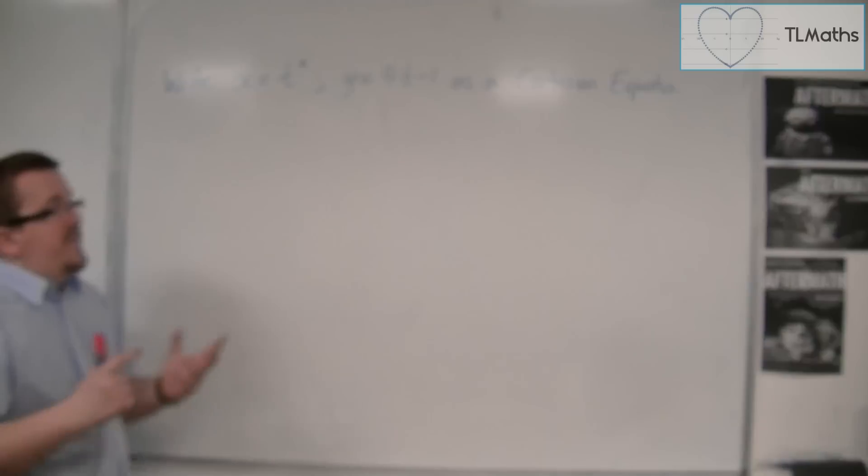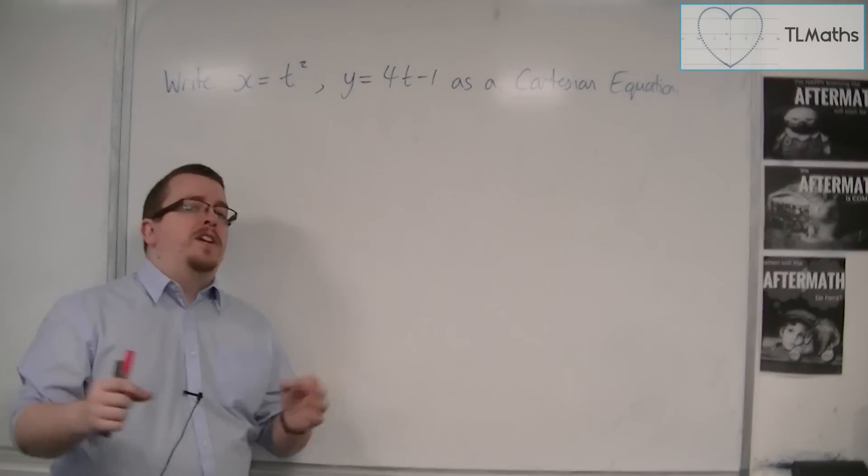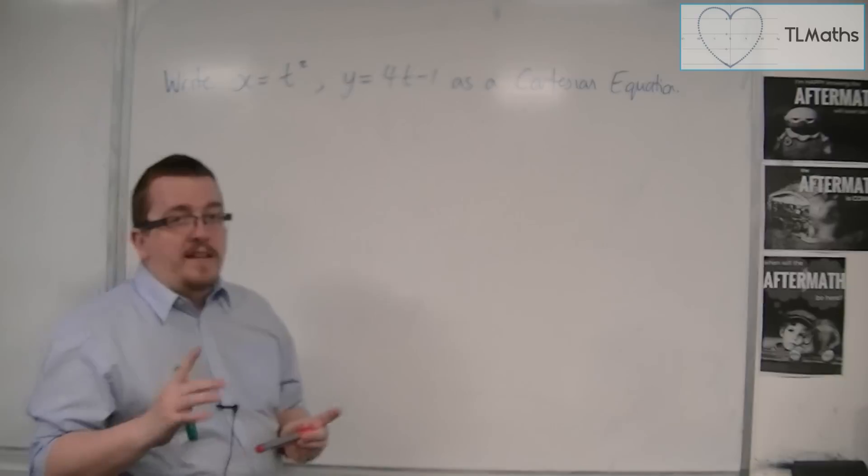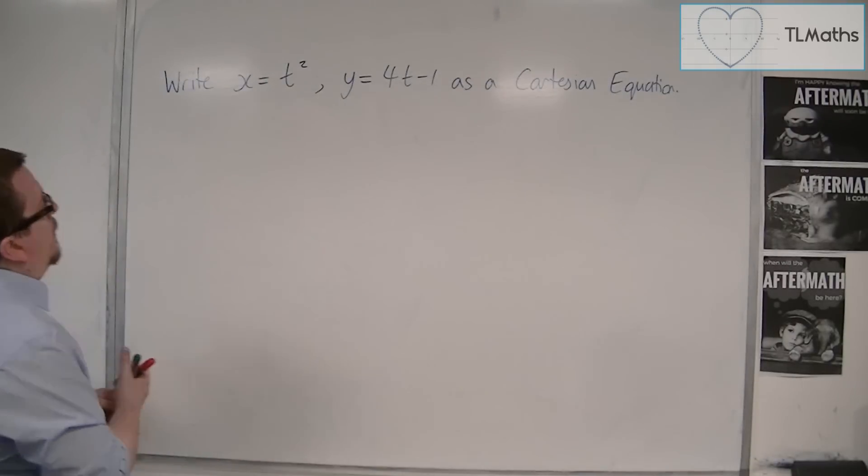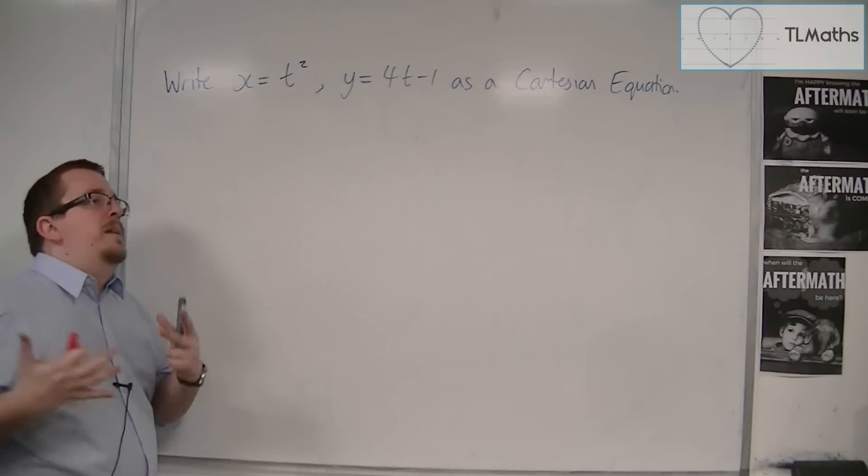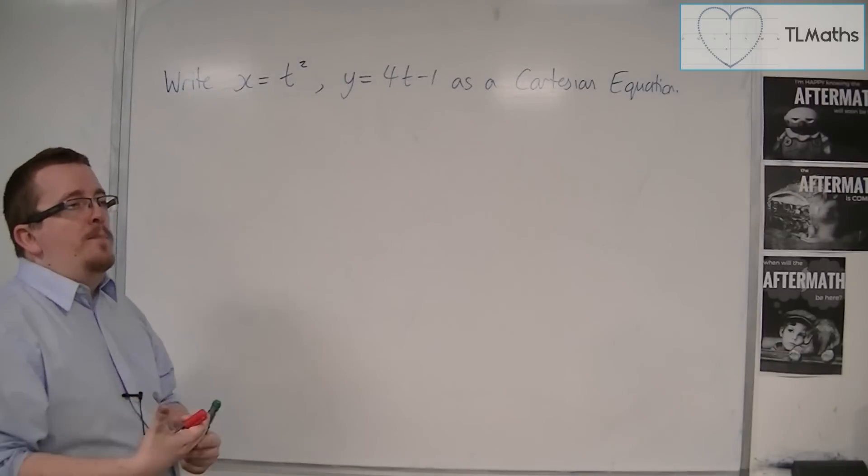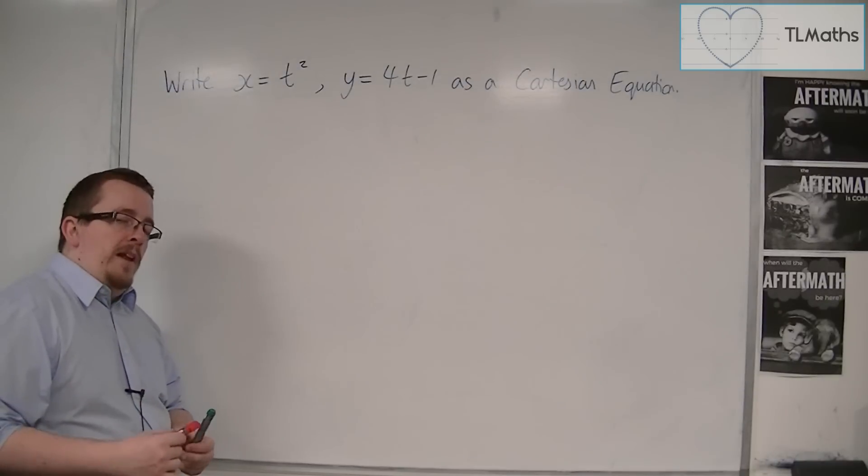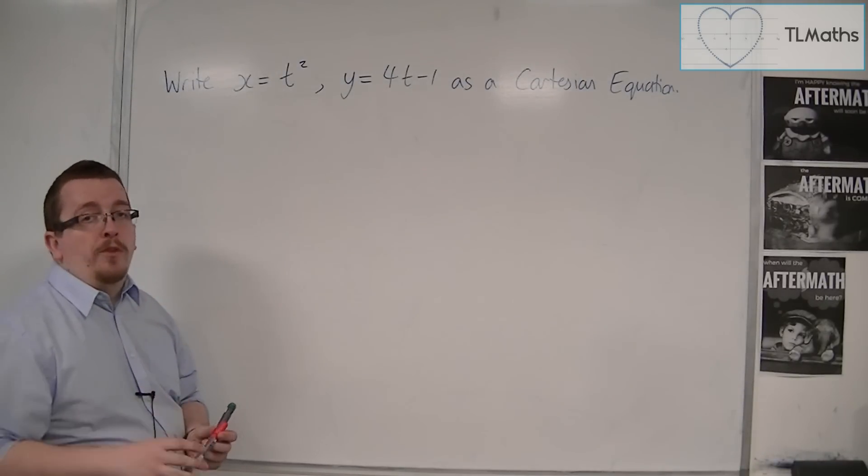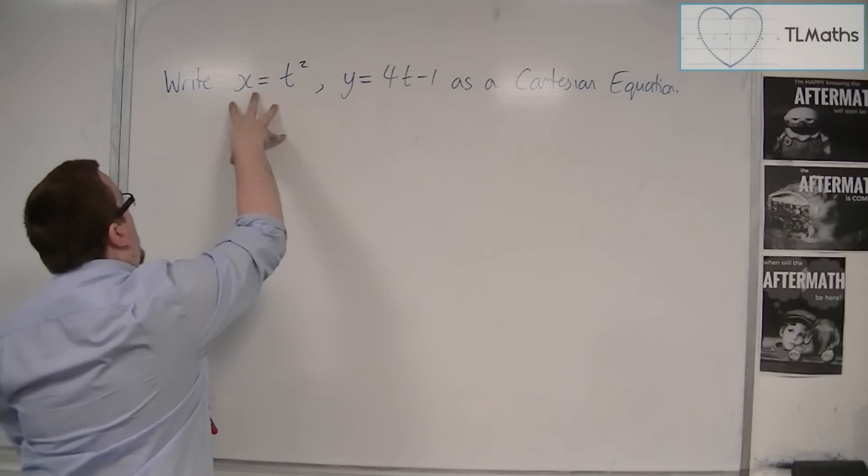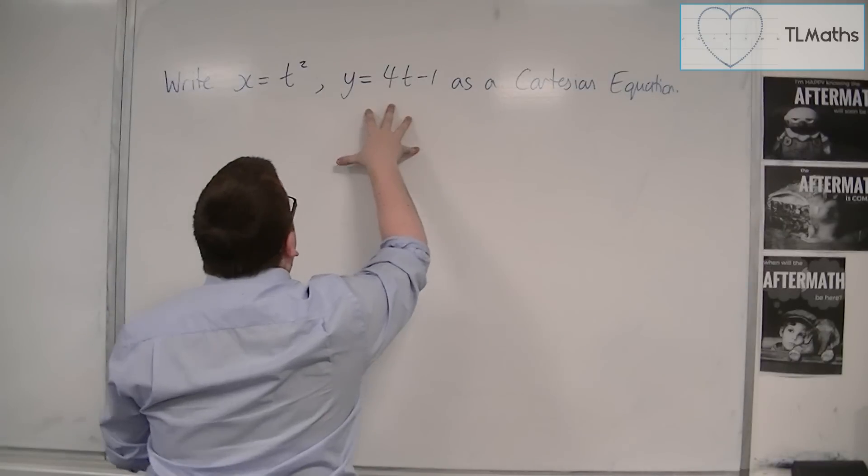Now, I said in the previous video that there were going to be some restrictions, and this is where they come in. So with x is equal to t squared, what some people might be thinking is that I could square root both sides to get t equals. But that brings about the plus minus, and that is something we want to avoid. So we're not going to go from this equation and then substitute into this one.